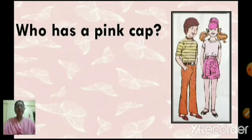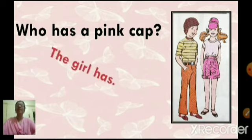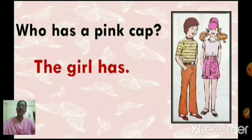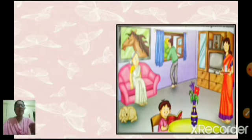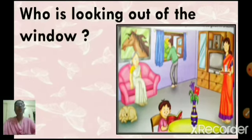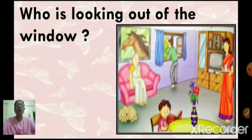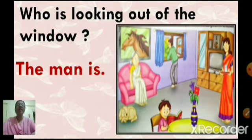Who has a pink cap? The girl has. Who has a pink cap? The girl has. Next example — now you can see a picture with so many people: grandmother, a man, one boy, one woman. What is the question? Who is looking out of the window? From this picture, who is looking out of the window? The man is. Who is looking out of the window? The man is.